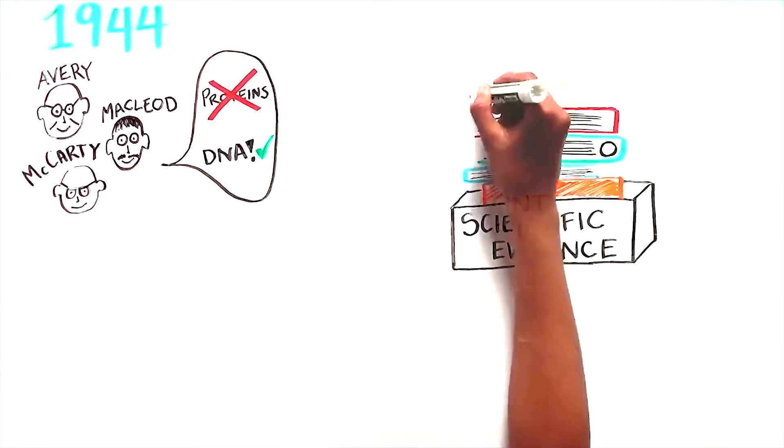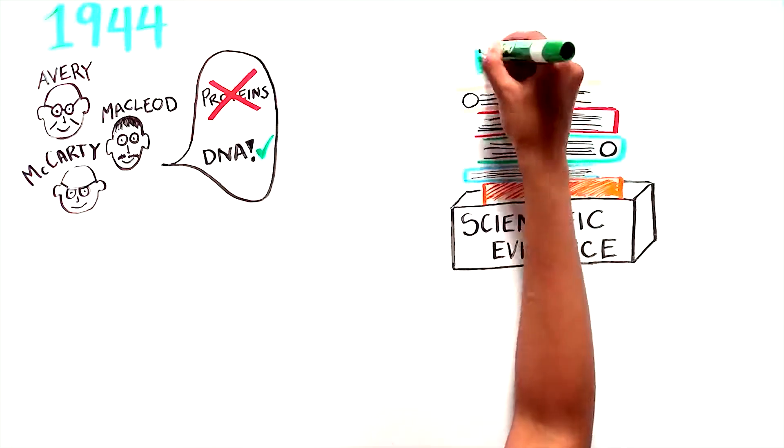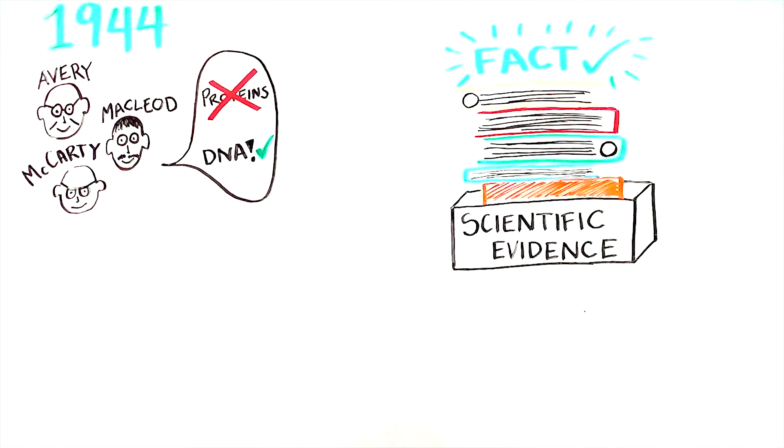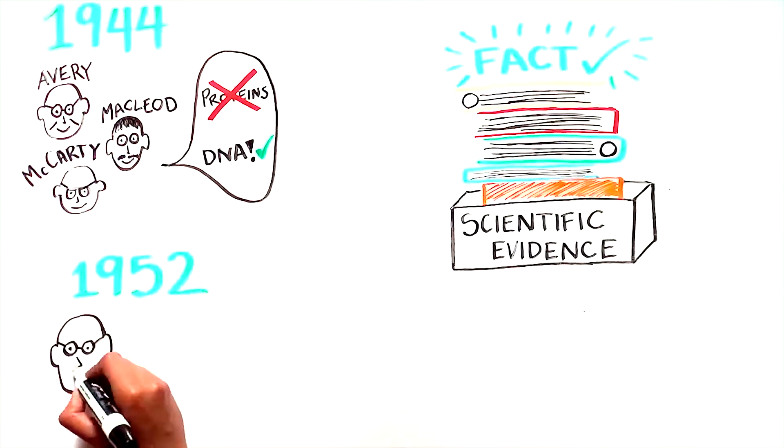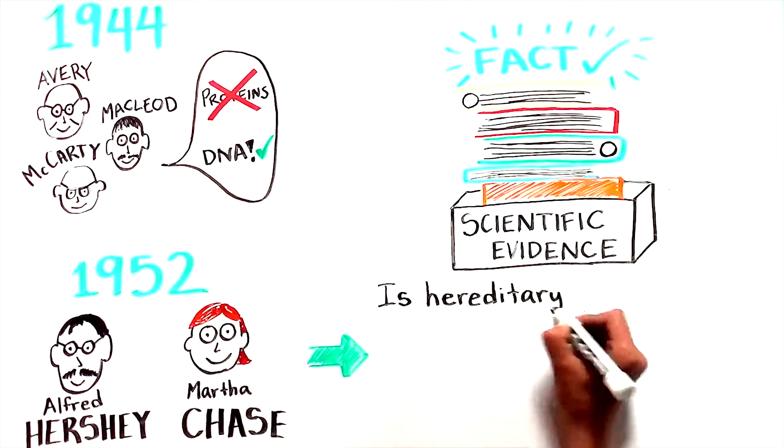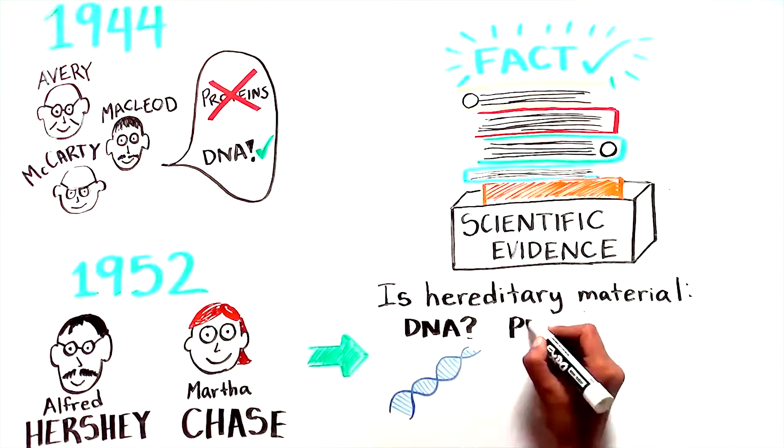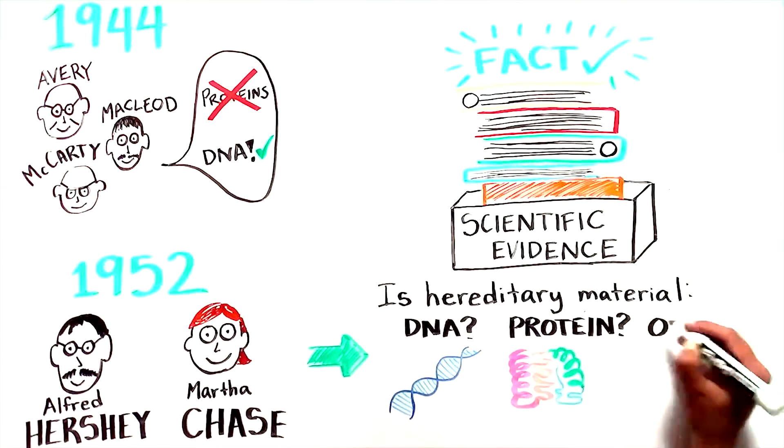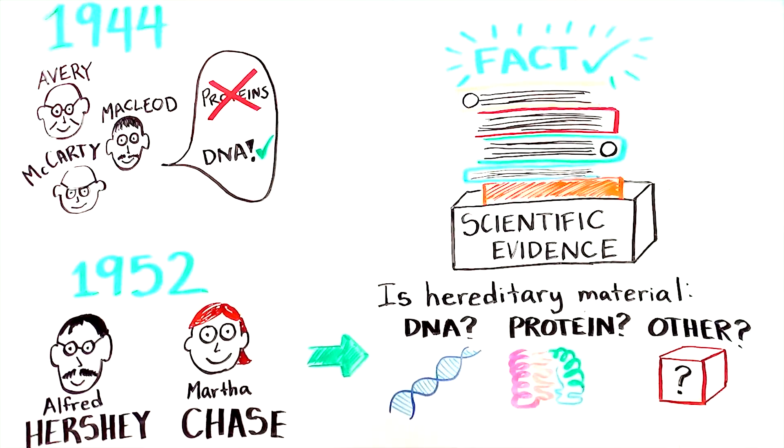In science, a great deal of evidence is needed before a new scientific idea is accepted as fact. Therefore, in 1952, Alfred Hershey and Martha Chase carried out experiments which addressed a similar question. Was DNA the hereditary material? Or was it protein? Or was it something else?